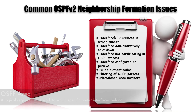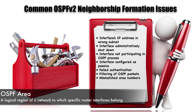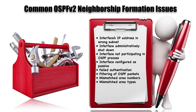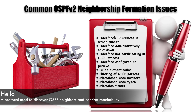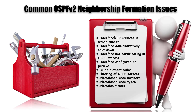If we have different area numbers on each end of a link, a neighborship is not going to form — the area numbers must match. We could also have a mismatch of area types; for example, one router might declare an area as a stub area while the other does not, which prevents neighborship formation. Timers must also match: the hello timer and the dead timer. Unlike EIGRP where matching timers was good practice but not required, with OSPF it is necessary — otherwise a neighborship will not form. We should also have the same MTU, the same maximum transmission unit, set for the interfaces on each end of a link.